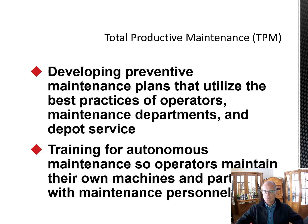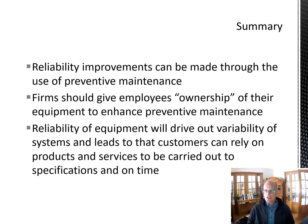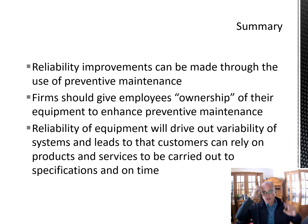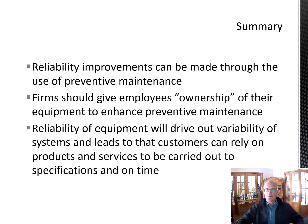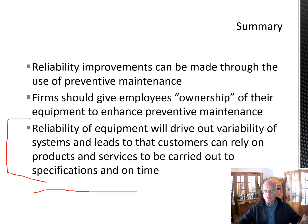To wrap up: reliability improvements can be made through maintenance and through the use of redundancies. Give employees ownership of their equipment to enhance preventive maintenance — if they're accountable and get credit when things go well, you can improve reliability just by having someone keep a closer eye on things. Reliability of equipment drives out variability, meaning customers can rely on products and services to be delivered to specifications and on time.